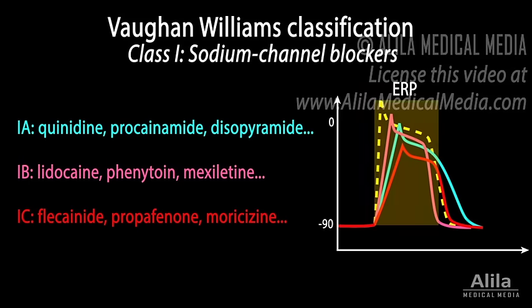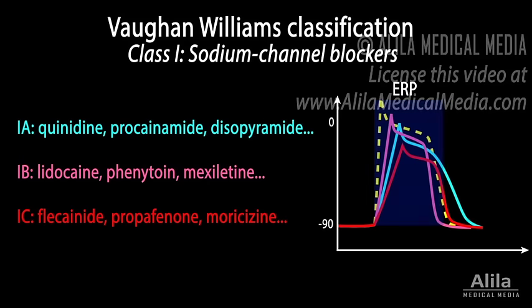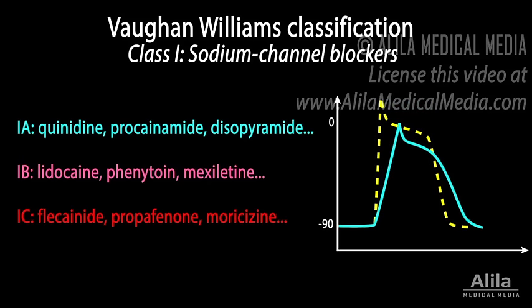While subclass 1C has no effect on ERP, 1A prolongs and 1B shortens ERP, respectively. Changes in ERP may have different outcomes for different types of arrhythmias. A longer ERP generally reduces cardiac excitability, but prolonged repolarizations may increase the risk of torsade de pointes, a type of tachycardia caused by after depolarizations.